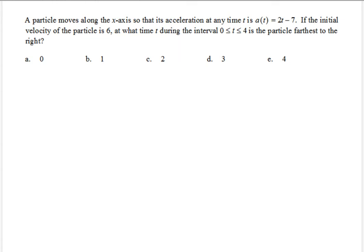A particle moves along the axis so that its acceleration at any time t is given by 2t minus 7. If the initial velocity of the particle is 6, at what time t during the interval from zero to 4 inclusive is the particle farthest to the right?